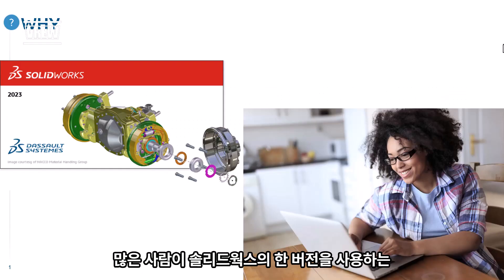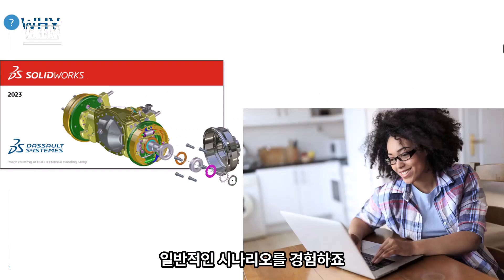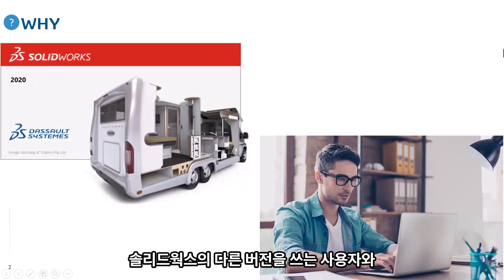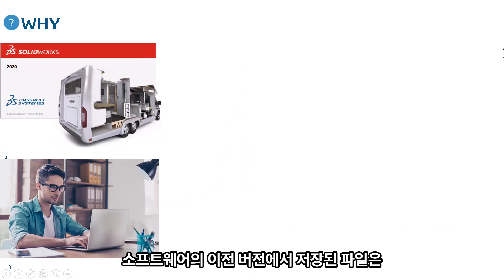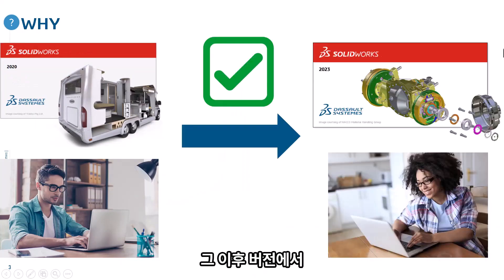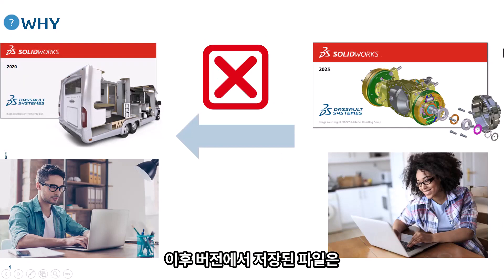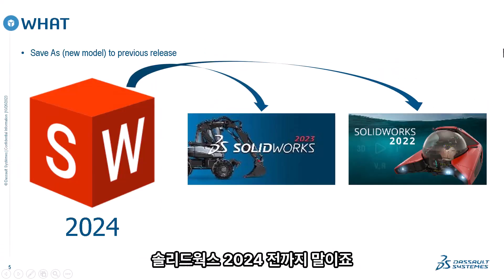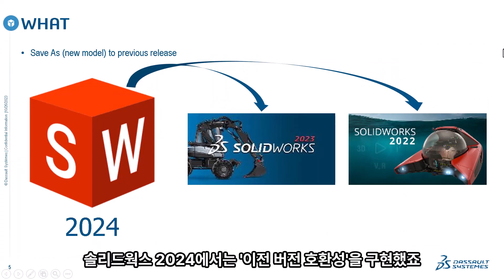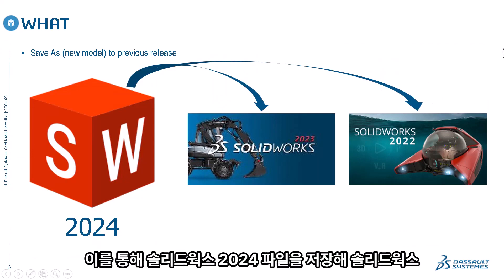Many of us experience a common scenario where you are using one version of SolidWorks and would like to collaborate with a user using another version. Files saved in an earlier version can be opened in a later version, but files saved in a later version cannot be saved to an earlier version — until now. In SolidWorks 2024, we have implemented Previous Release Compatibility.